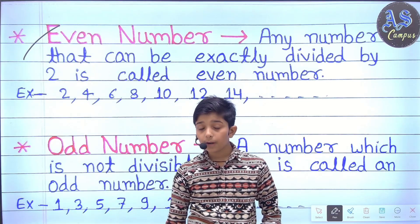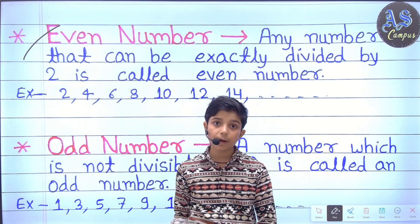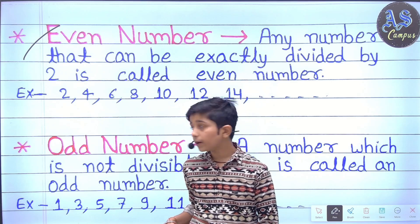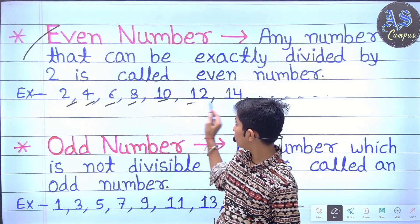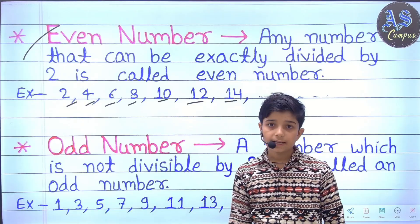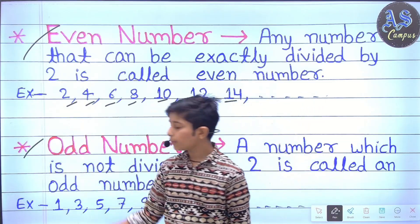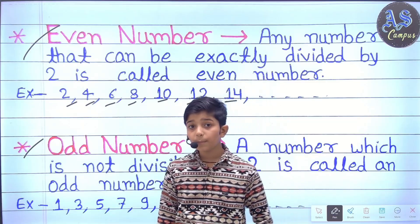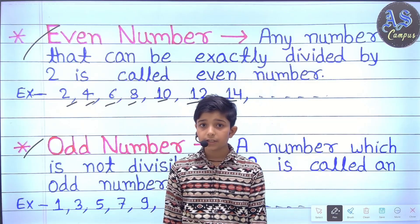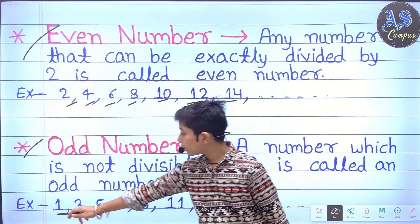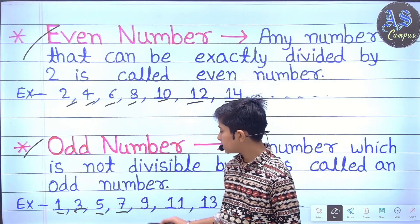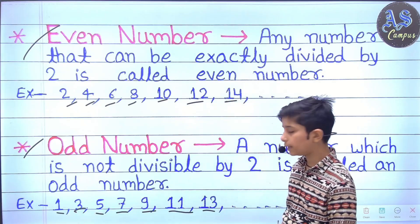Even numbers: A number which is exactly divisible by 2 is called even number. Example: 2, 4, 6, 8, 10, 12, 14, etc. Odd numbers: A number which is not divisible by 2 is called odd number. Example: 1, 3, 5, 7, 9, 11, 13, etc.